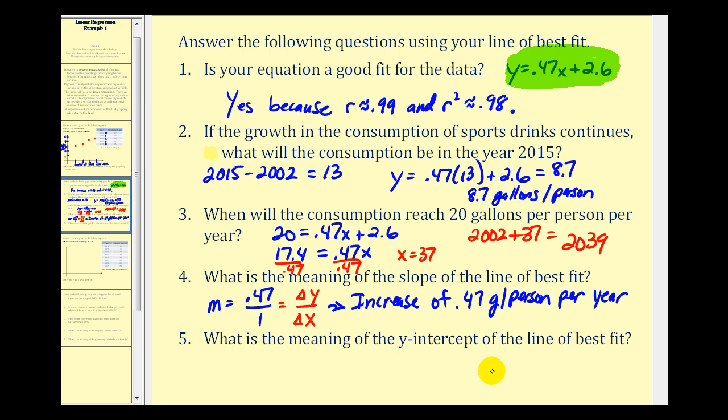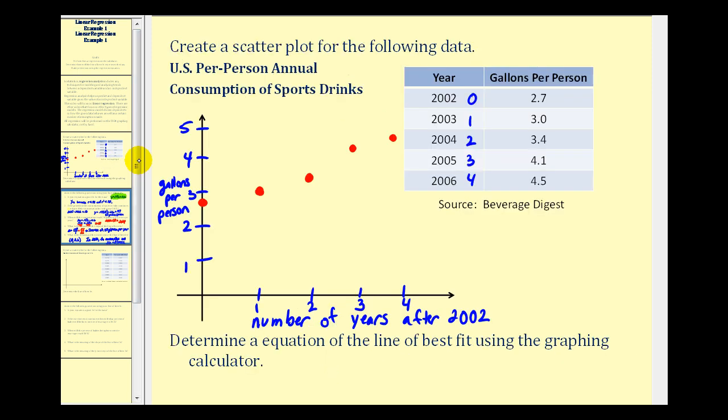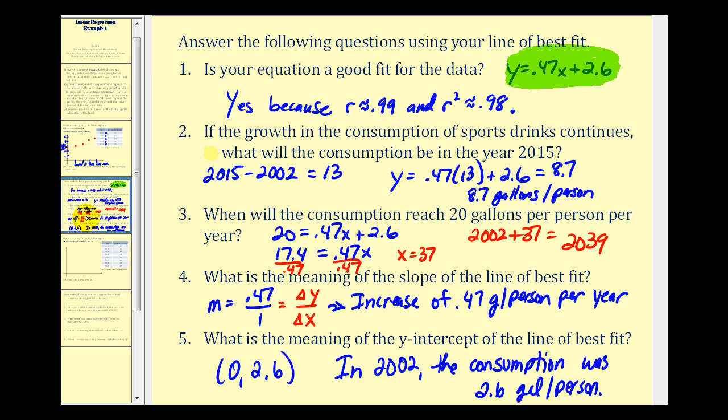And the last question, what is the meaning of the y-intercept of the best fit line? We know the y-intercept is the point zero to point six. Zero represents the number of years past 2002, and y is the amount of consumption. So the meaning of this y-intercept is, according to the model, in 2002, the consumption was two point six gallons per person. This actually is incorrect. If we go back and look at our data, the true consumption was two point seven gallons per person. And this is just telling us that there is a margin of error with our model. It's not a perfect model. All models have their limitations. But in this case, the margin of error is obviously very small. We'll take a look at a second example in the next video. Thank you for watching.